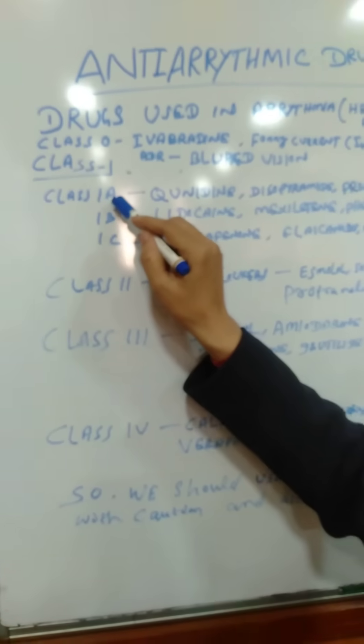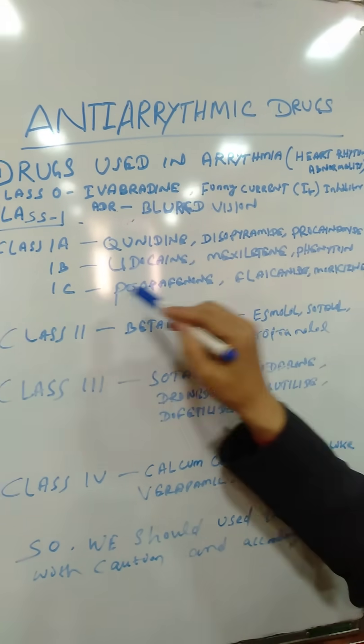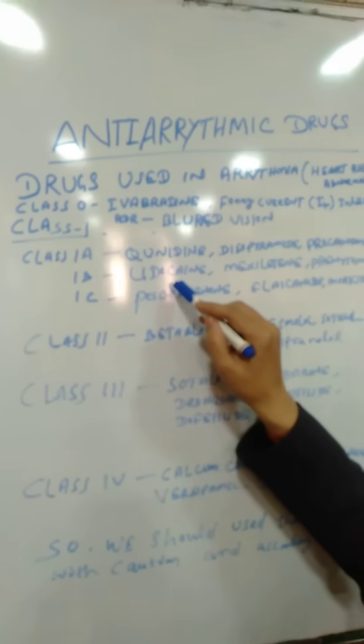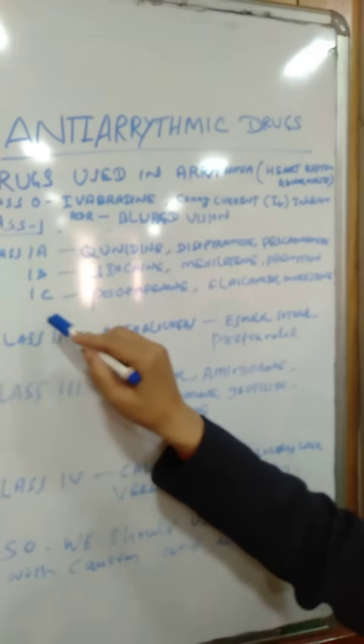In class 1A, there is quinidine, disopyramide, and procanamide. In class 1B, there are drugs like lidocaine, mexilatine, and venetoine.